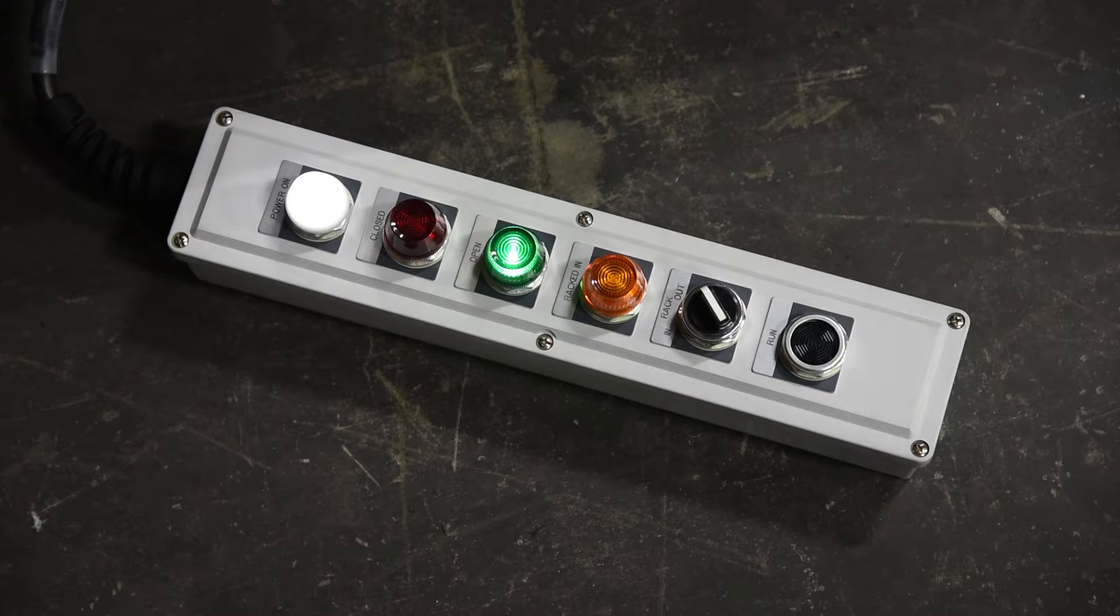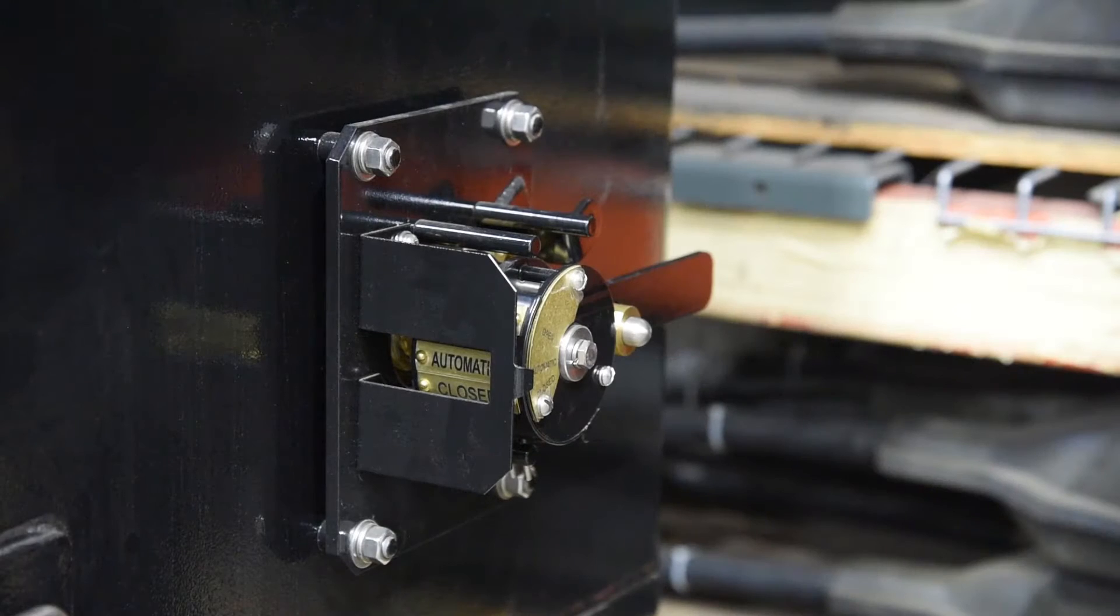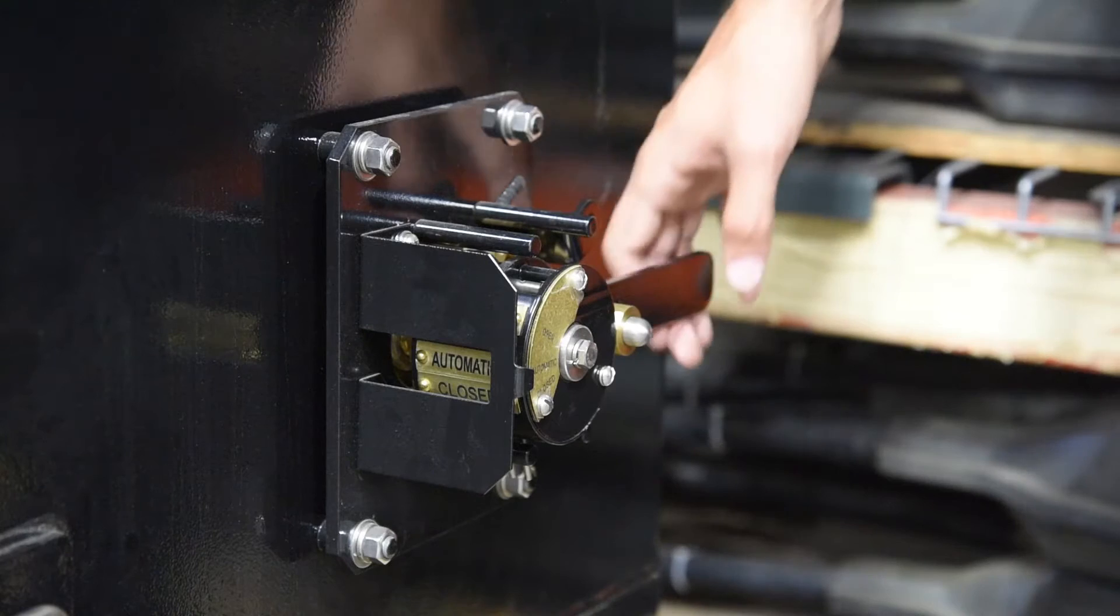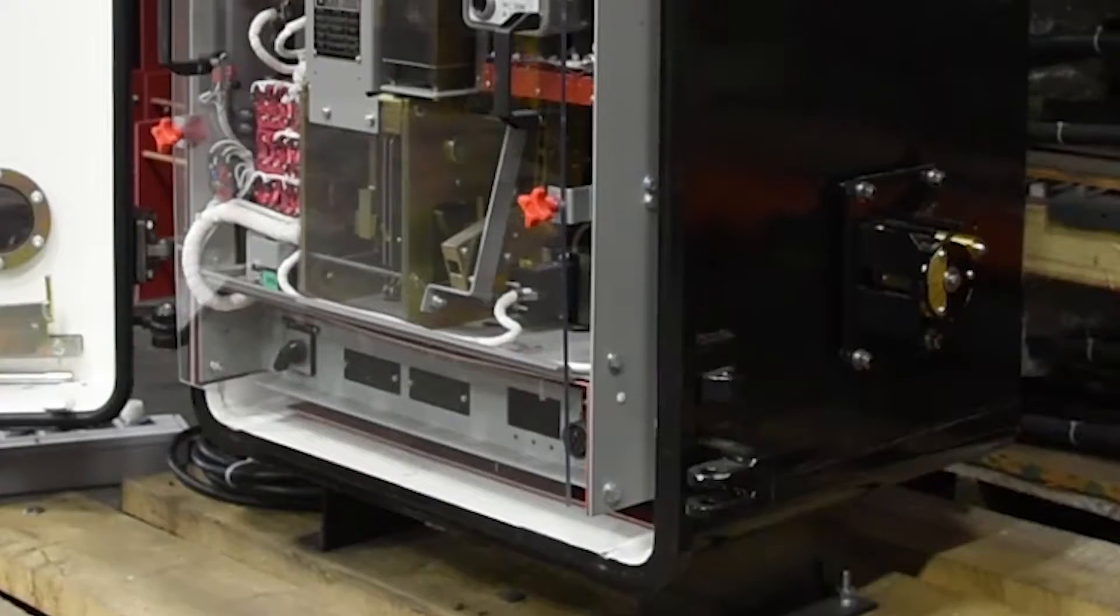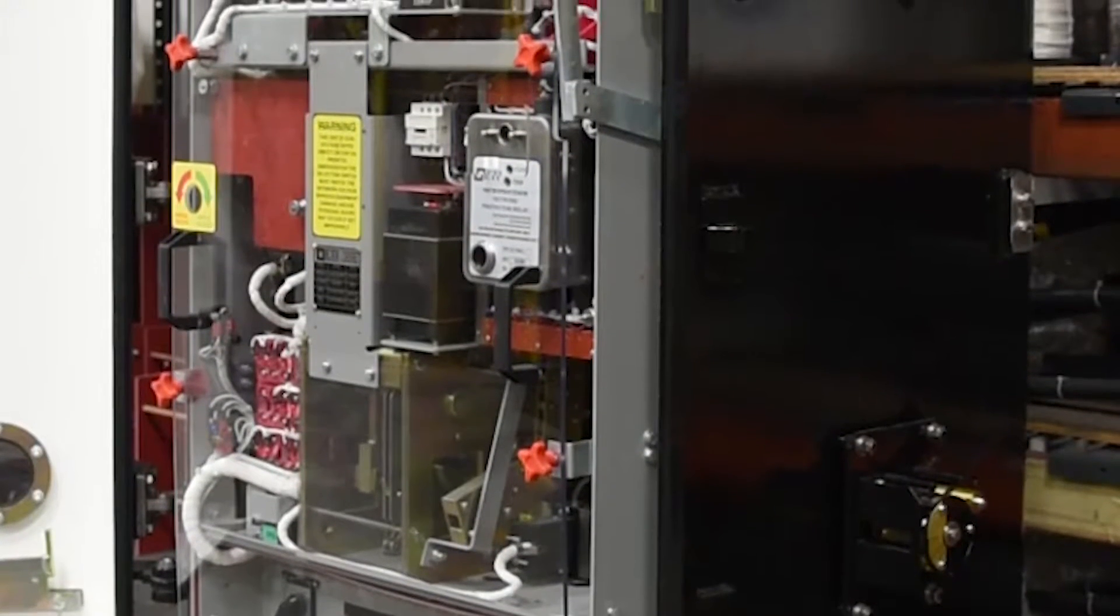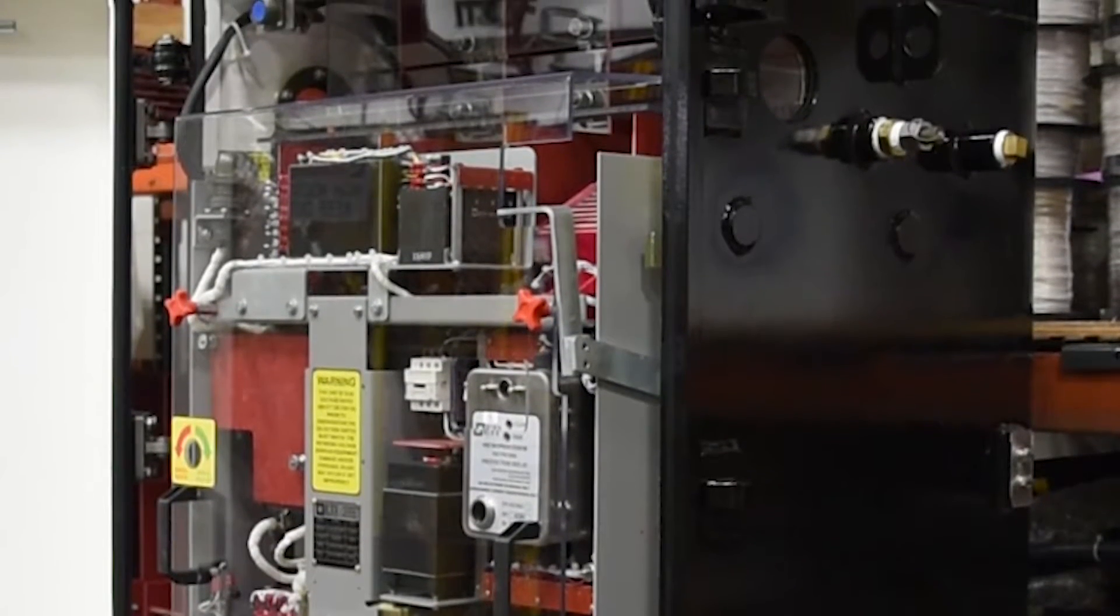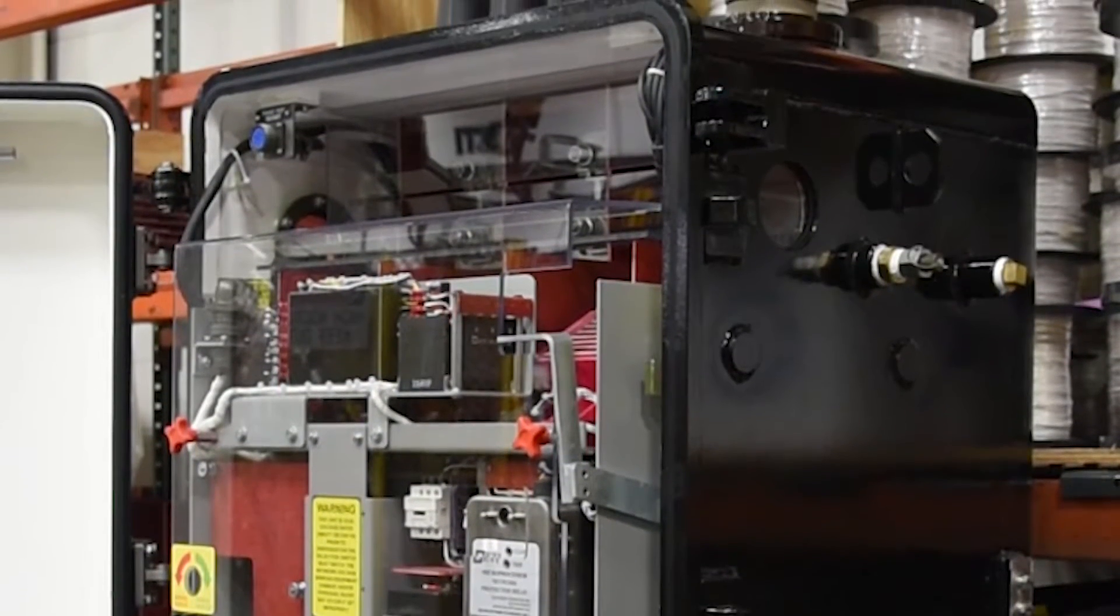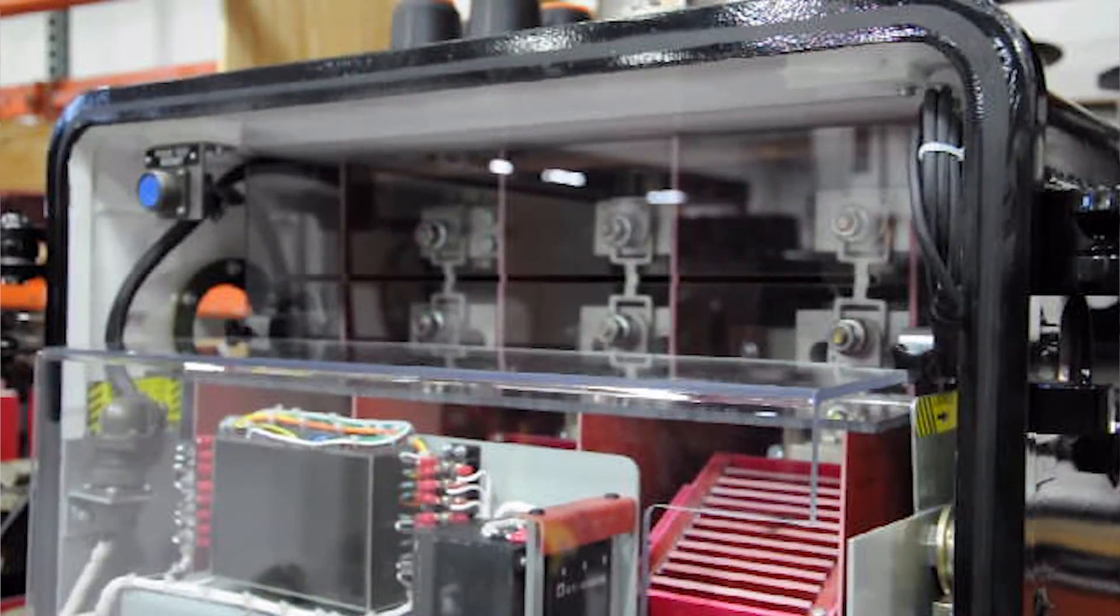The 416NP features electrical and mechanical interlocks to prevent the unit from racking in or out while under load. A limit switch requires the handle to be moved to the open position before the racking system can operate. The electrical interlock follows the B contact through the auxiliary switch preventing the user from racking the unit in or out with the network protector in the closed position. The racking system does not receive power without connecting the racking pendant.